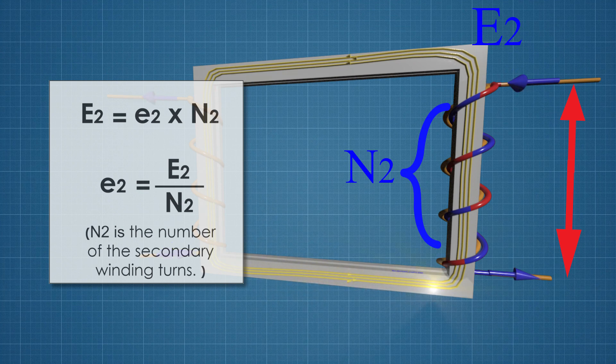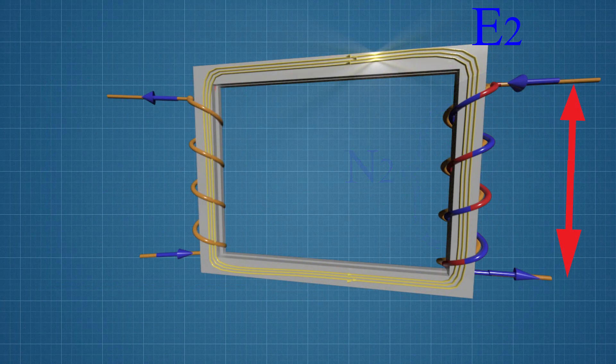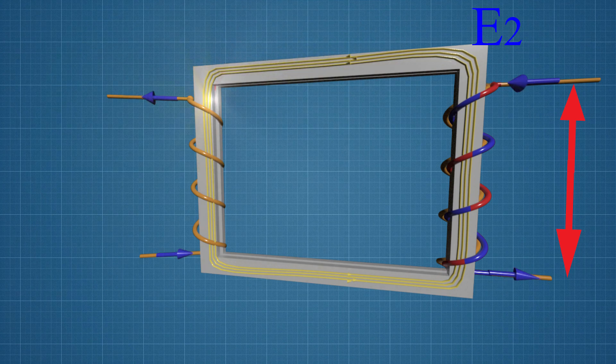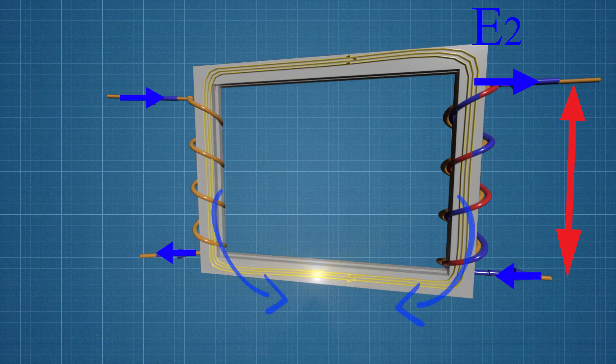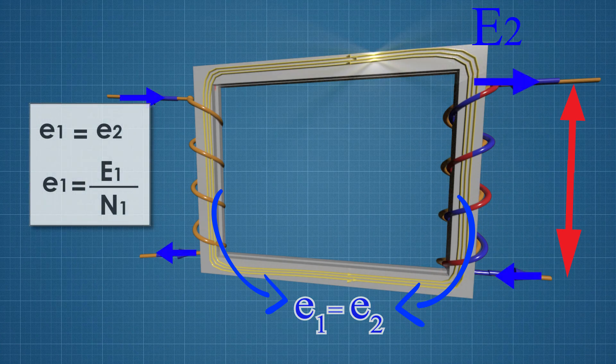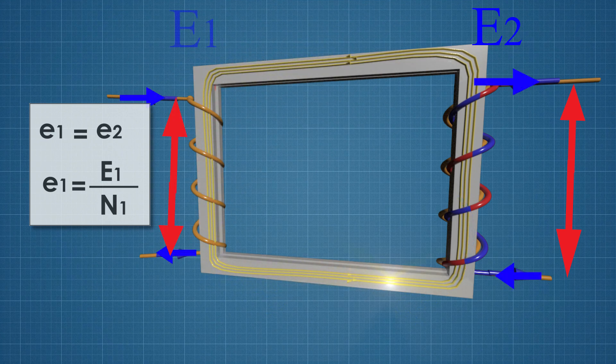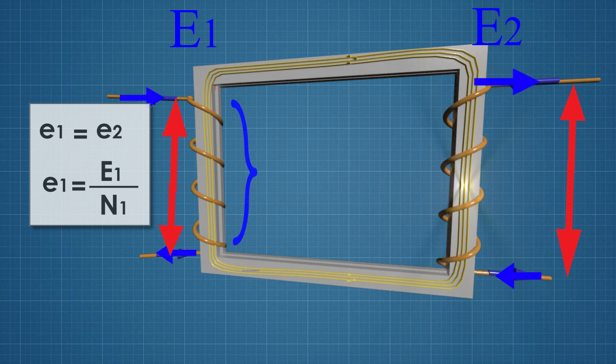Where N2 is the number of secondary winding turns. Since the same magnetic flux penetrates both the primary and secondary windings, the EMF on the turns will be equal: e1 = e2. Therefore, the EMF on the primary winding turn equals the ratio of total EMF and the number of turns: e1 = E1/N1.